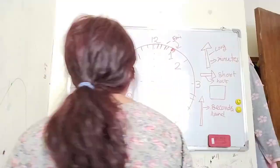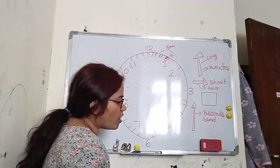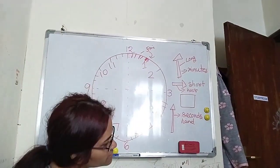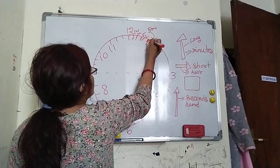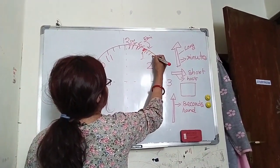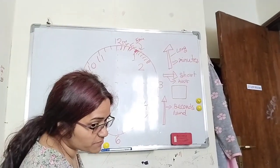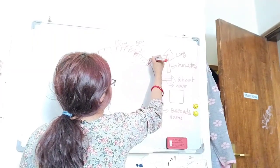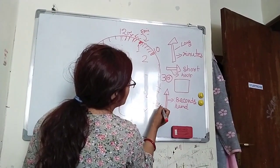Now, how will we calculate our time? The long hand moves one minute — that means each small line is one minute: one minute, two minute, three minute, four minute, five minutes. From 12 to 2 is another five, so five plus five equals ten. When it is at 3, that is fifteen minutes. When it is at 4, twenty minutes.